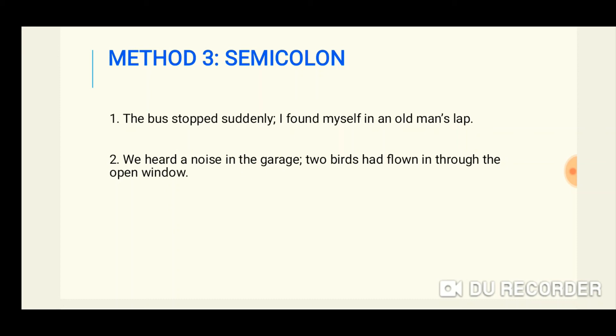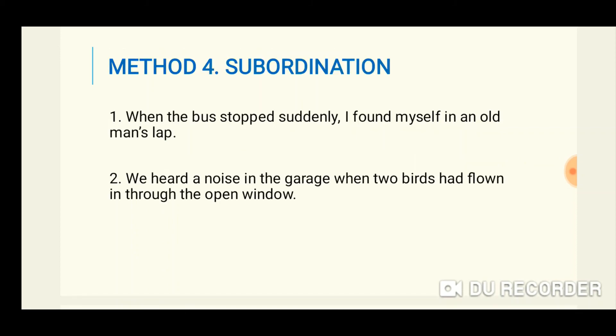The fourth method is to use subordination. Subordination is a way of showing that one thought in a sentence is not as important as another thought. For example: 'When the bus stopped suddenly, I found myself in an old man's lap.' And: 'We heard a noise in the garage when two birds had flown in through the open window.' Notice that when we subordinate, we use dependent words such as when, because, and although. Thanks for watching. Allah hafiz.